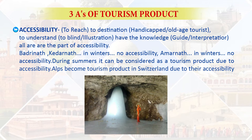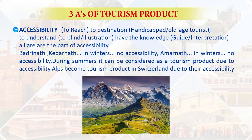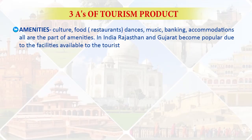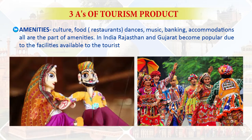You have to add accessibility — once the Alps of Switzerland become accessible, they become a tourism product. The third A is amenities like culture, food, and dance. Many people from across the world wish to enjoy Rajasthan and Gujarat because the amenities are there. So once we add attraction, accessibility, and amenities to an existing tourism resource, it becomes a tourism product.